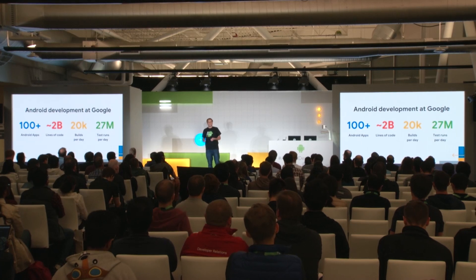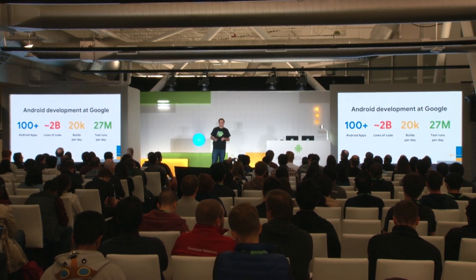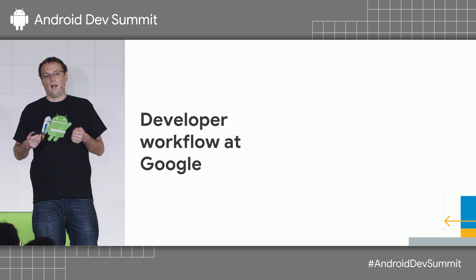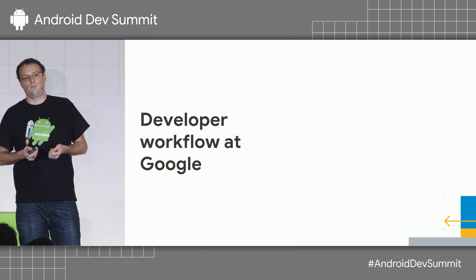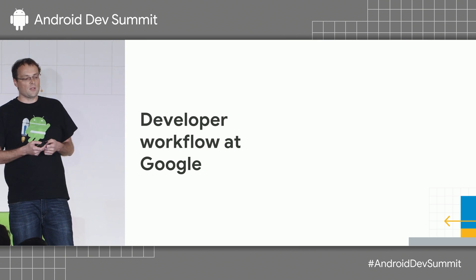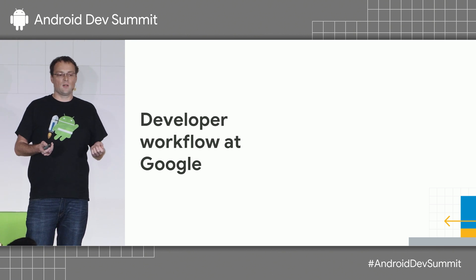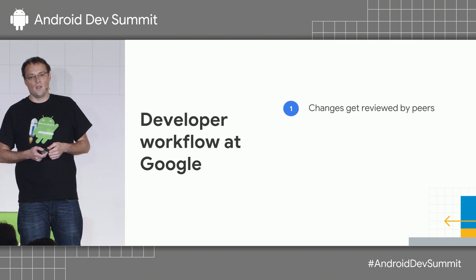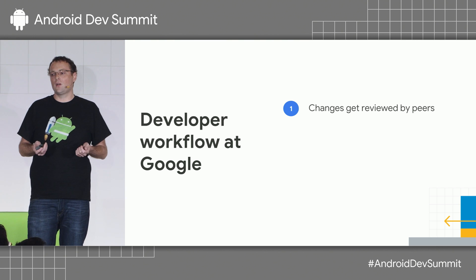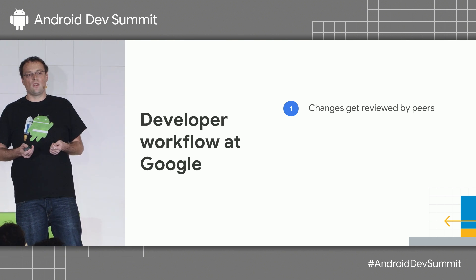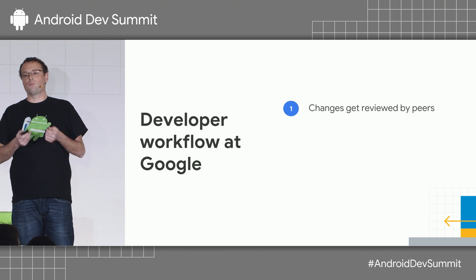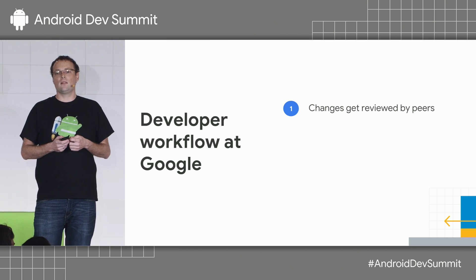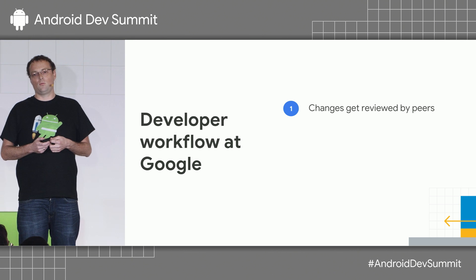So how do we create these high-quality apps, and how do we maintain this quality over such a long time? I think one of the key things here is our engineering culture. A typical developer workflow at Google includes a strong code reviewing culture. Code reviews are very thorough, and before you can submit your change or pull request, you have to get reviewed by at least one of your peers.